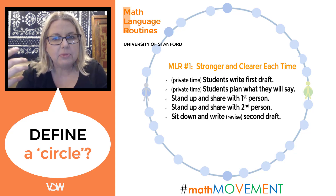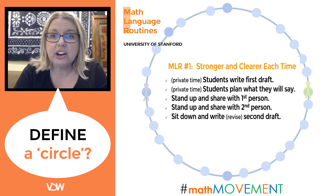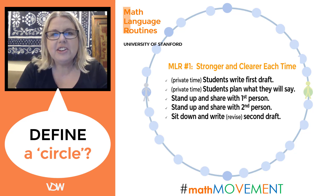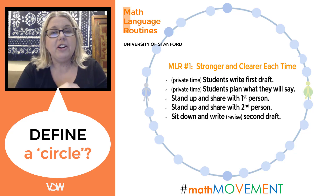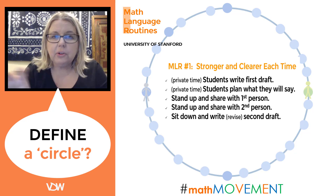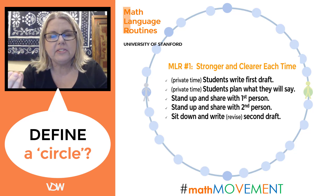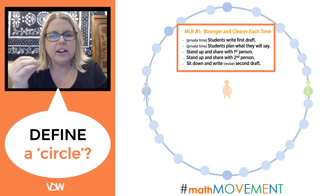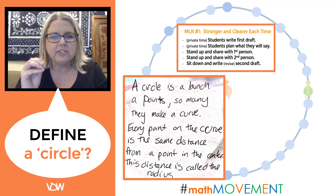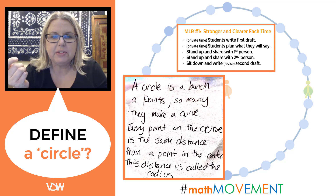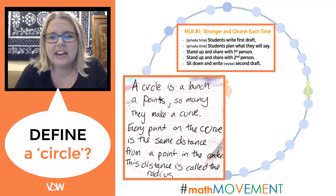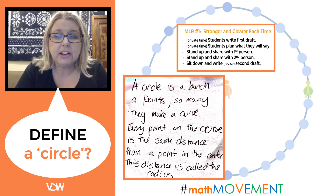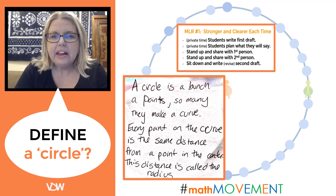As students read their own definitions aloud, they catch a lot of their own mistakes — just like good writers do when they read aloud. Their thoughts become clearer each time they share. I then have everyone sit down and say: no matter if you love your first definition, I want everyone to start over and write a second draft. Again I give them a couple of minutes. Many definitions will look something like this: 'A circle is a bunch of points, so many that they make a curve, and every point on the curve is the same distance from a point in the center — that distance is called a radius.'